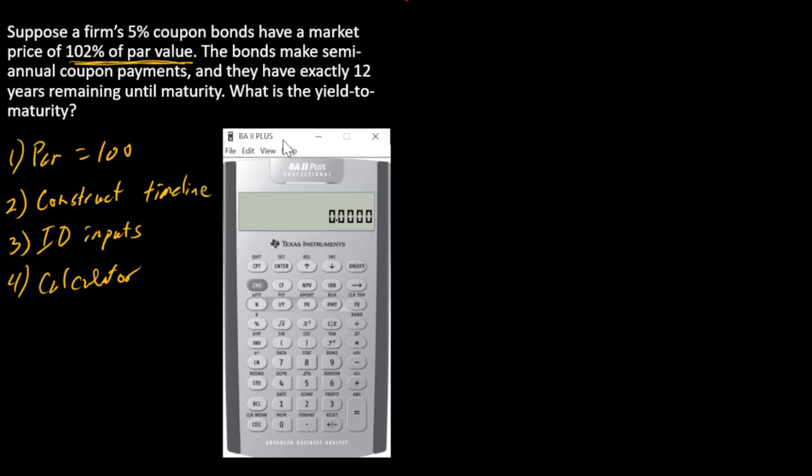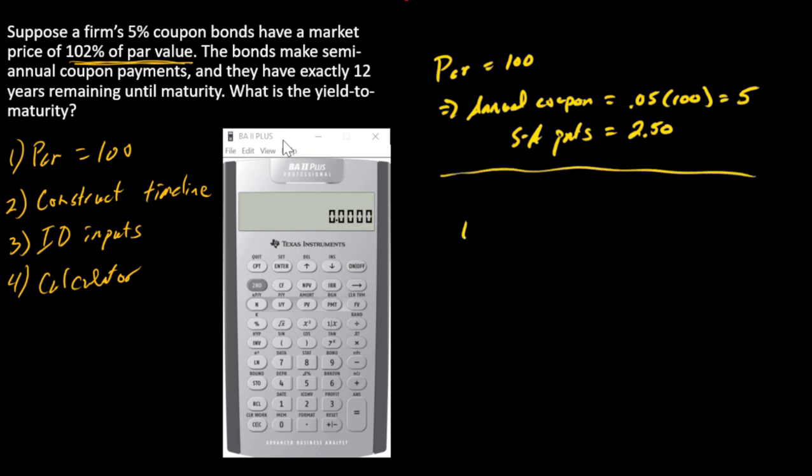Starting with a par value of $100, what does that mean for coupons? So coupons annually, it's going to be five percent of 100 or 0.05 times 100 equals 5. Now since this is a bond with semi-annual coupons, we know that that's going to be split into two payments of 2.50 every six months, and so our semi-annual payments are going to equal 2.50.